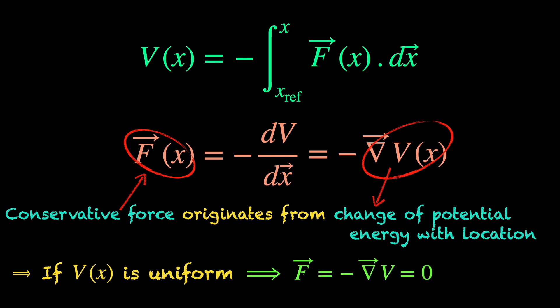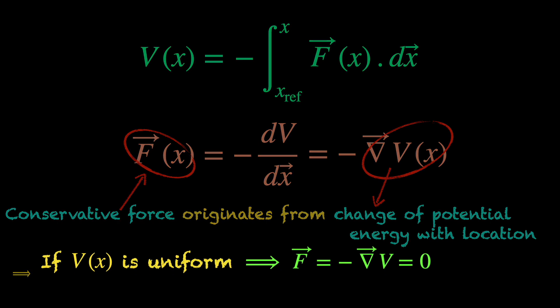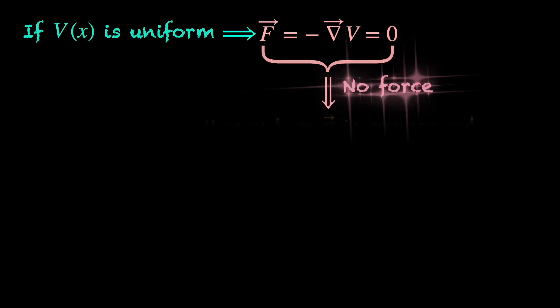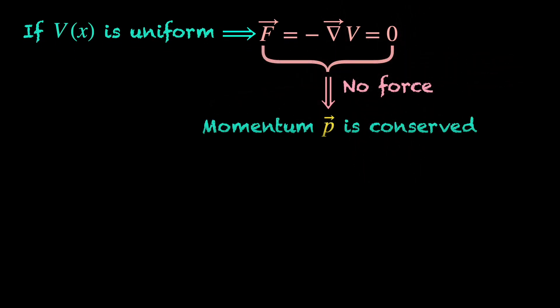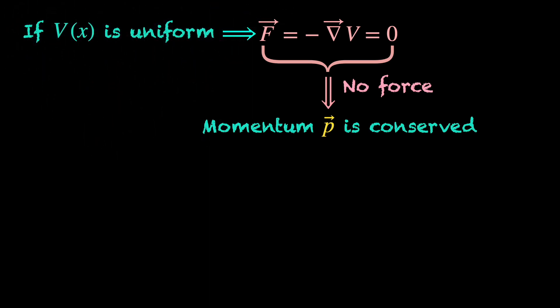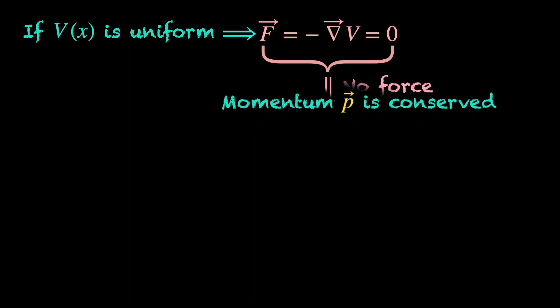And we already know from Newton's second law or the force equation or the equation of motion of the system, whatever you want to call it, what zero applied force means. The momentum is conserved. So, we see, if an object has uniform potential energy across all space points, its equation of motion or dynamics ensures that its momentum is conserved.